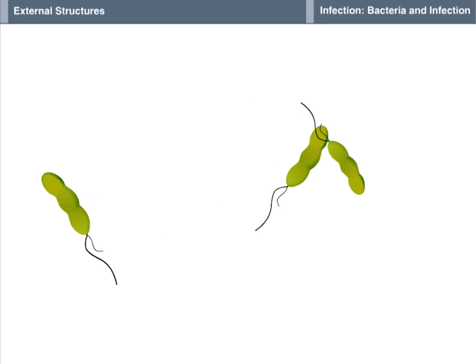Flagella can be located anywhere on the bacterium and give bacteria motility, the ability to move on their own. Motility allows the bacterium to move into more favorable environments.